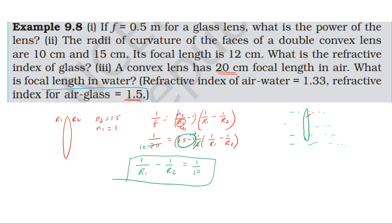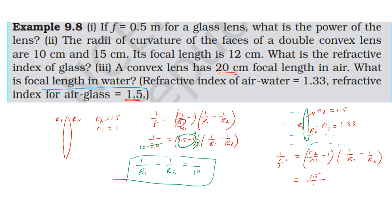To find the focal length in water, we use the lens maker's equation for the lens immersed in water. The refractive index of the lens (glass) is n2 equals 1.5, and the surrounding medium (water) is n1 equals 1.33. The formula is: 1/f' equals (n2/n1 minus 1) into (1/R1 minus 1/R2).